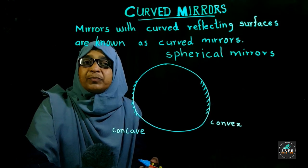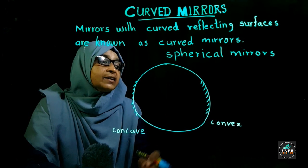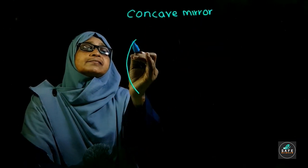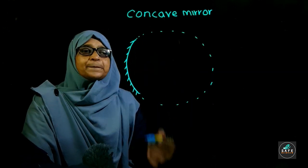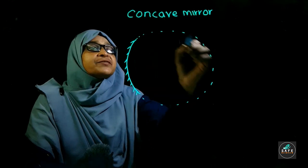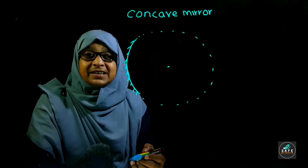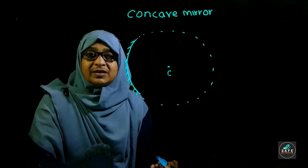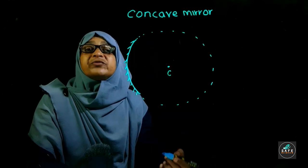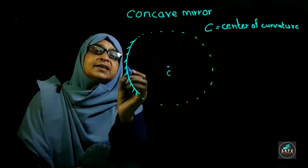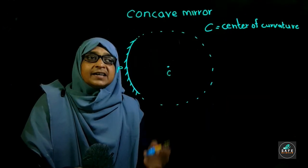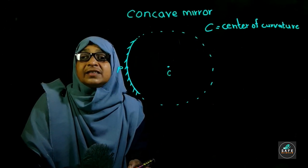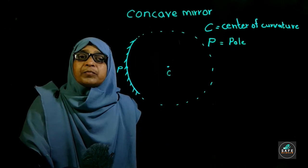Let us see the points of the concave mirror and the convex mirror further. This concave mirror belongs to a sphere. The center of that sphere is called the center of curvature of the mirror. The center point of the mirror, marked as P, is called the pole.